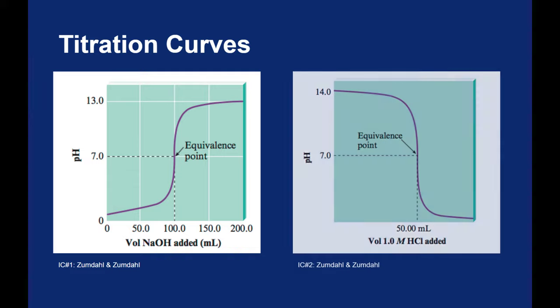We could do just the opposite. We could add a strong acid to a strong base and we have just flipped the curve. You are starting with a strong base so you start with a really high pH and you are adding an acid and so the pH is going down.